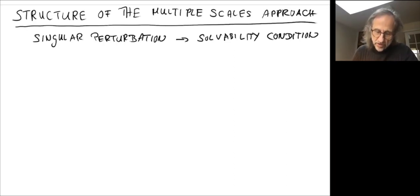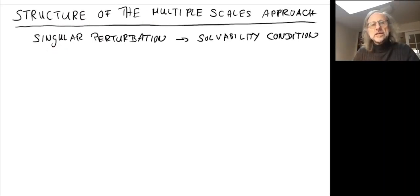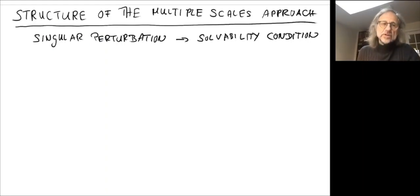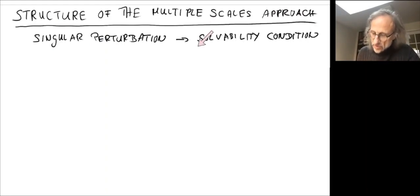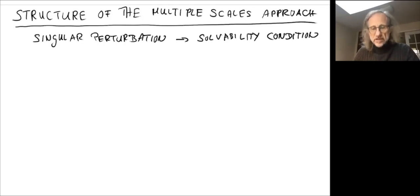We'll see that what's going on is that all these calculations at the bifurcation — you do an expansion at the bifurcation point, you do a singular perturbation calculation — singular because the linear operator has a zero eigenvalue and is singular. Because of that, the result you're looking for is always obtained via a solvability condition. That's the key thing to recall about these singular perturbation calculations.